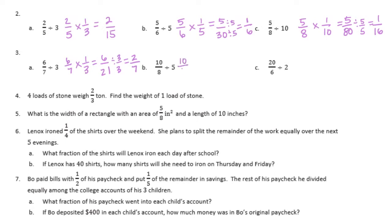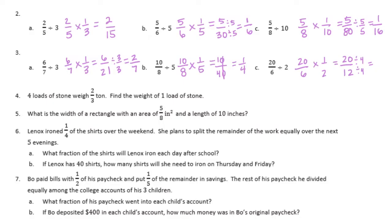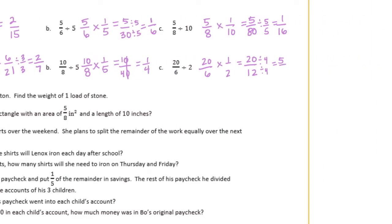Ten-eighths divided by five: ten-eighths times one-fifth would be ten-fortieths. We can divide both of those by ten, or just cancel out the zeros, and you get one-fourth. And then twenty-sixths divided by two, or times one-half, is twenty-twelfths. We can divide both of those by four: twenty divided by four is five, twelve divided by four is three, so we get five-thirds, which is actually one-and-two-thirds.